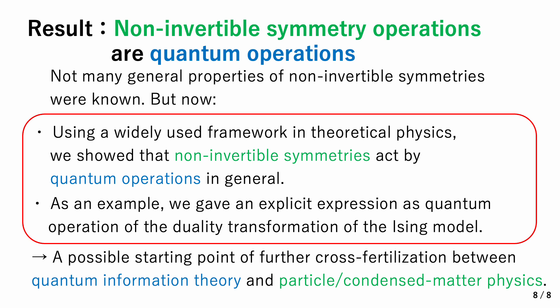As an example, we gave an explicit expression as a quantum operation of the duality transformation of the Ising model. We hope that it serves as a possible starting point of further cross-fertilization between quantum information theory and particle and condensed matter physics.